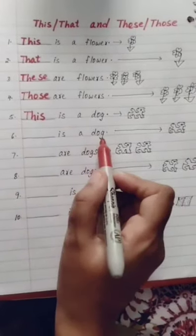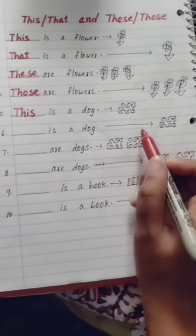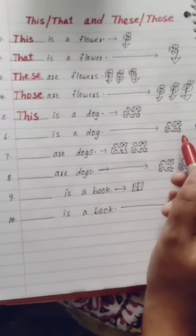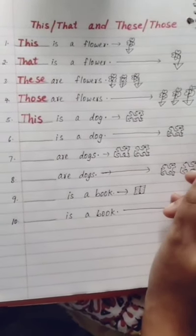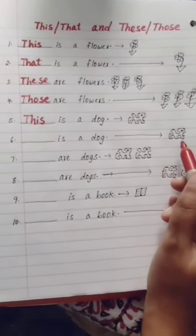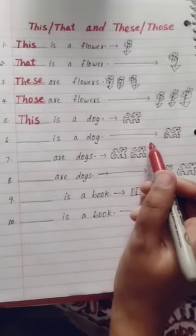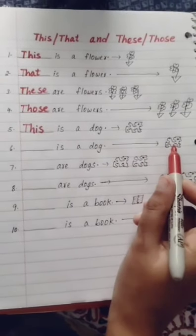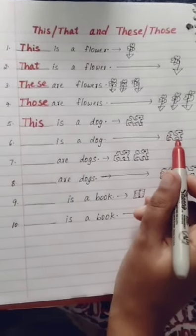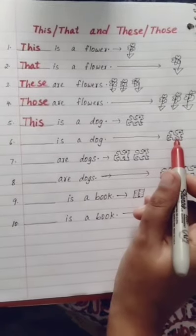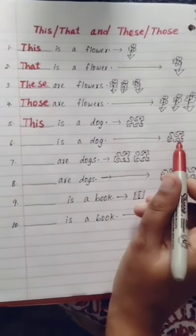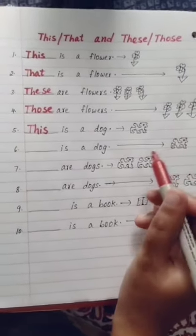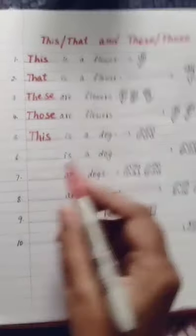Sixth example: blank is a dog. The dog is far away. There is only one dog, singular noun, and it is far away. So we have to use 'that' — that is a dog.